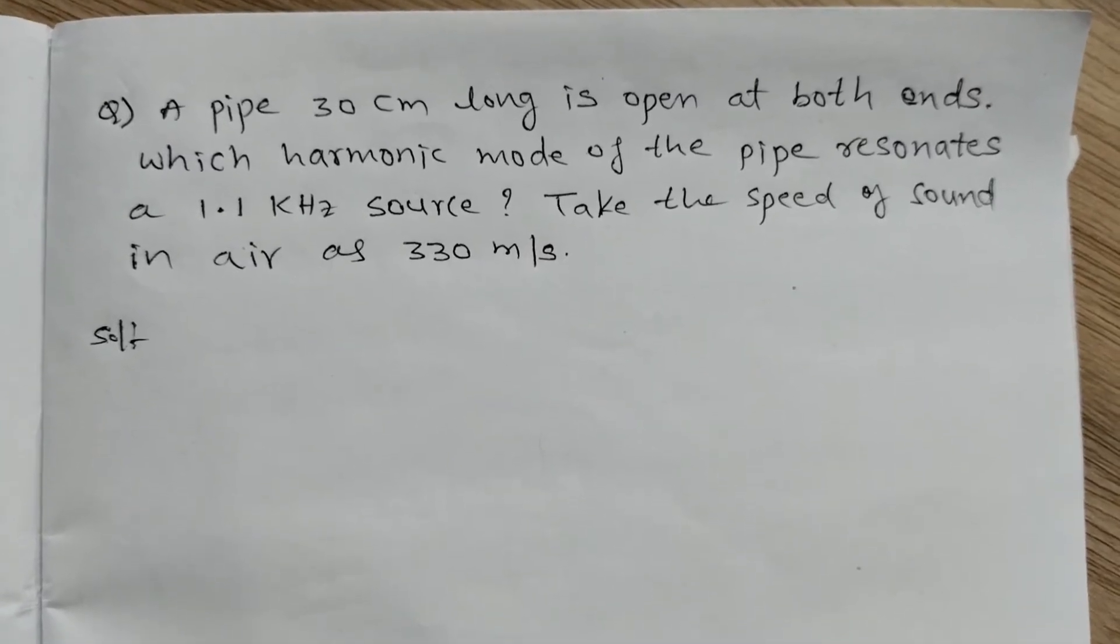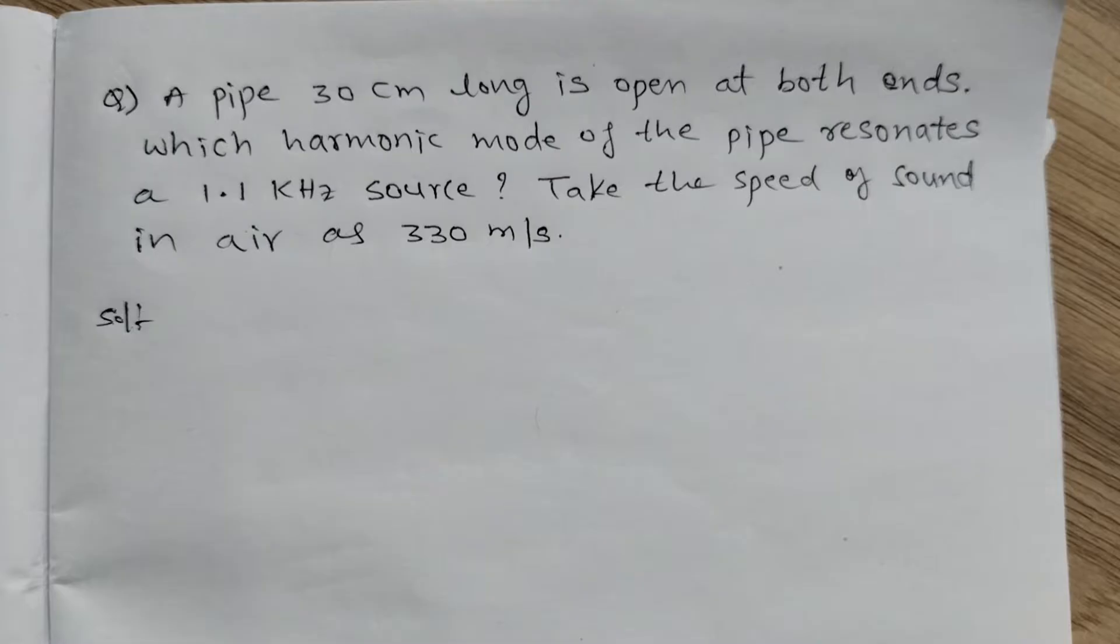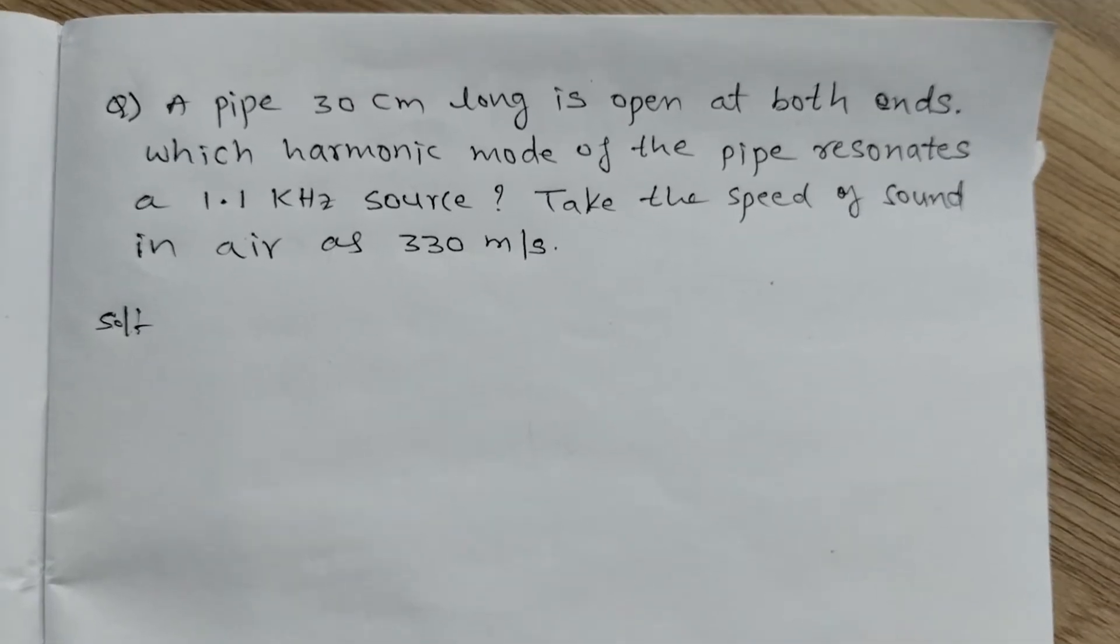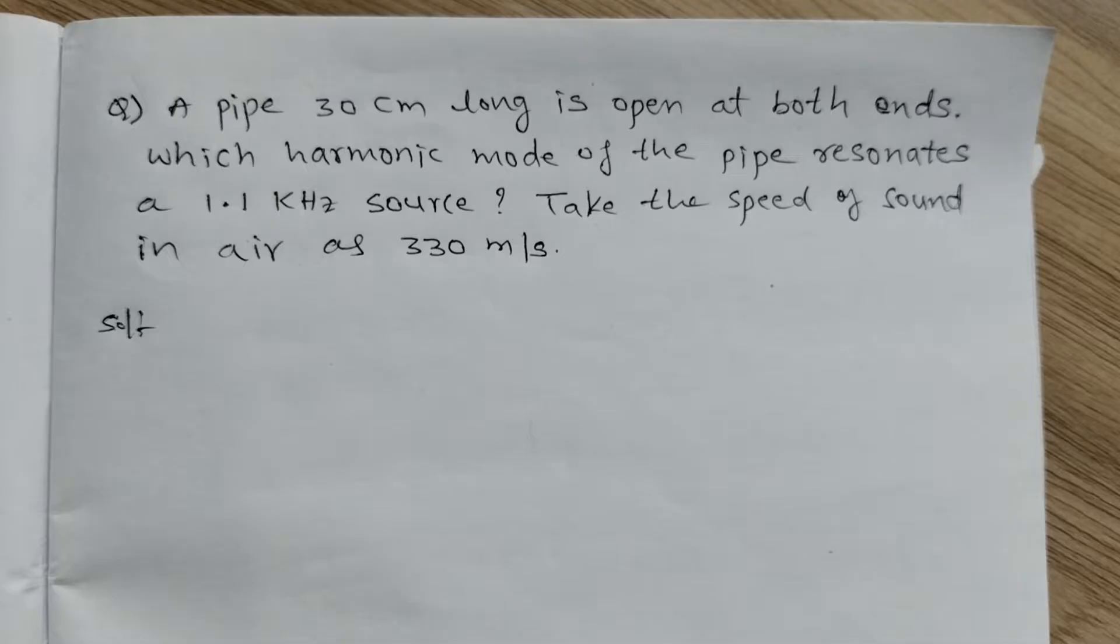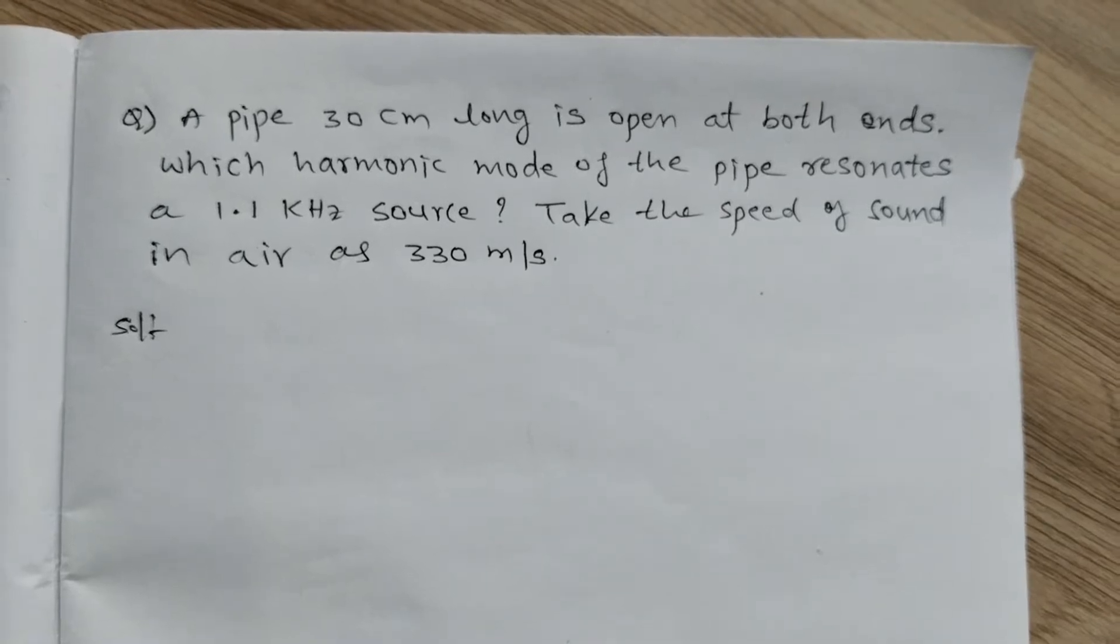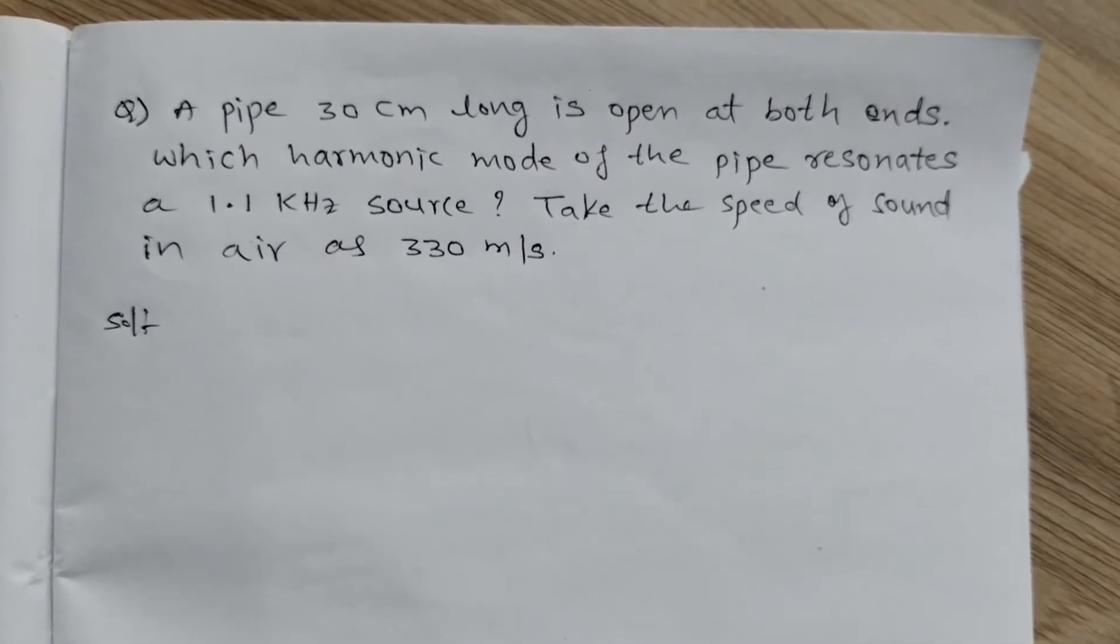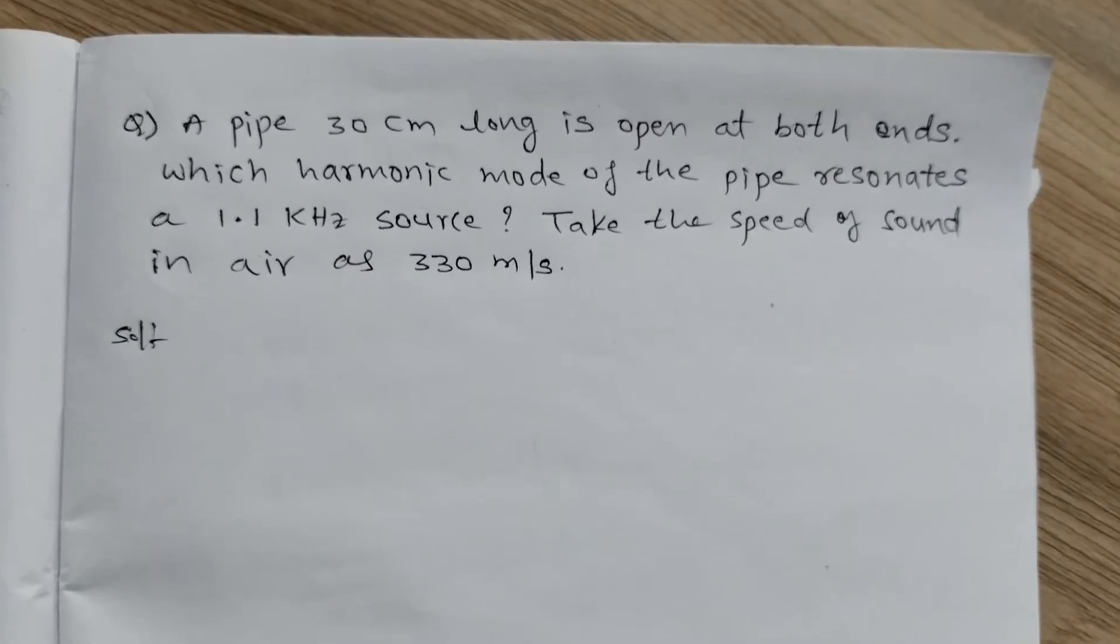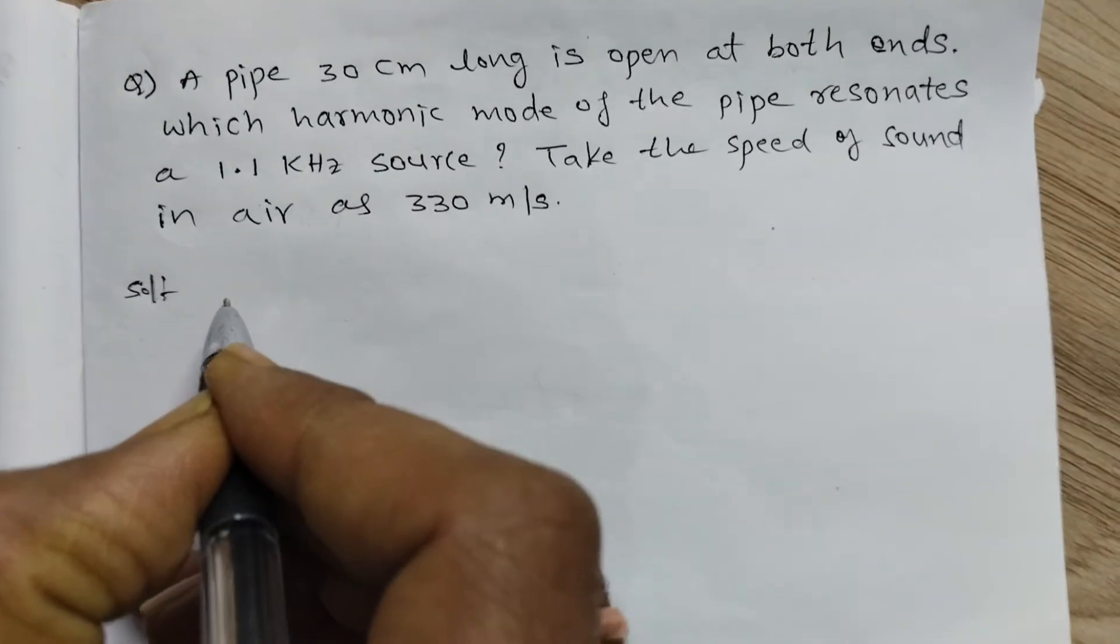A pipe 30 centimeter long is open at both ends. Which harmonic mode of the pipe resonates with a 1.1 kilohertz source? Take the speed of sound in air as 330 meter per second. So given: pipe is an open pipe. Length of the pipe is 30 centimeters. It gives 1.1 kilohertz source. Speed of sound is 330 meter per second. So at which harmonic will it give the 1.1 kilohertz frequency?